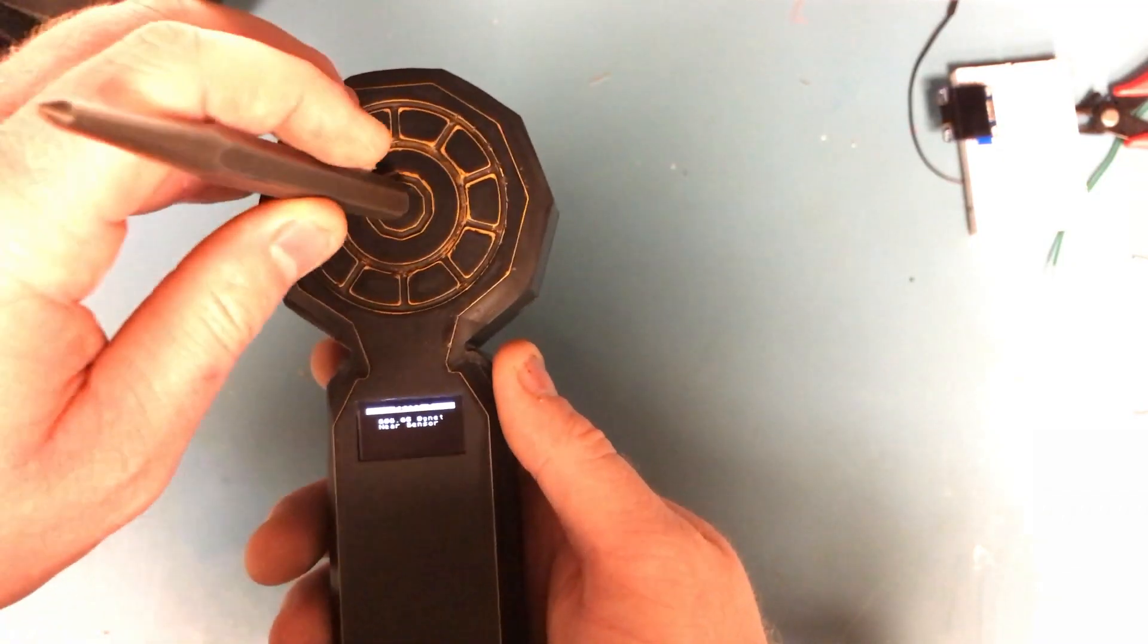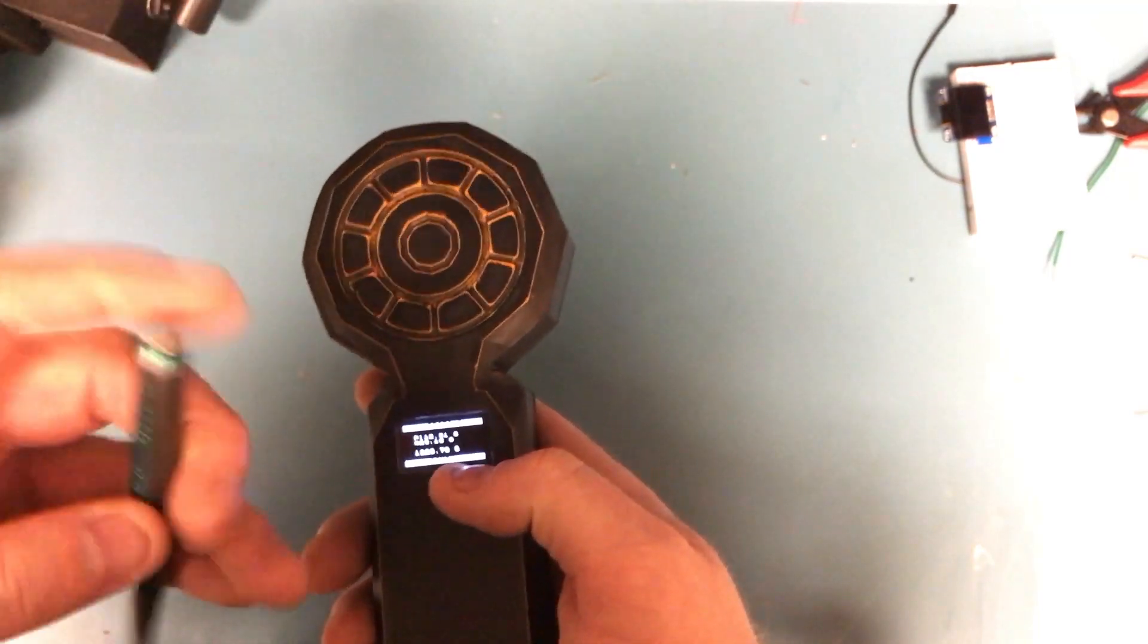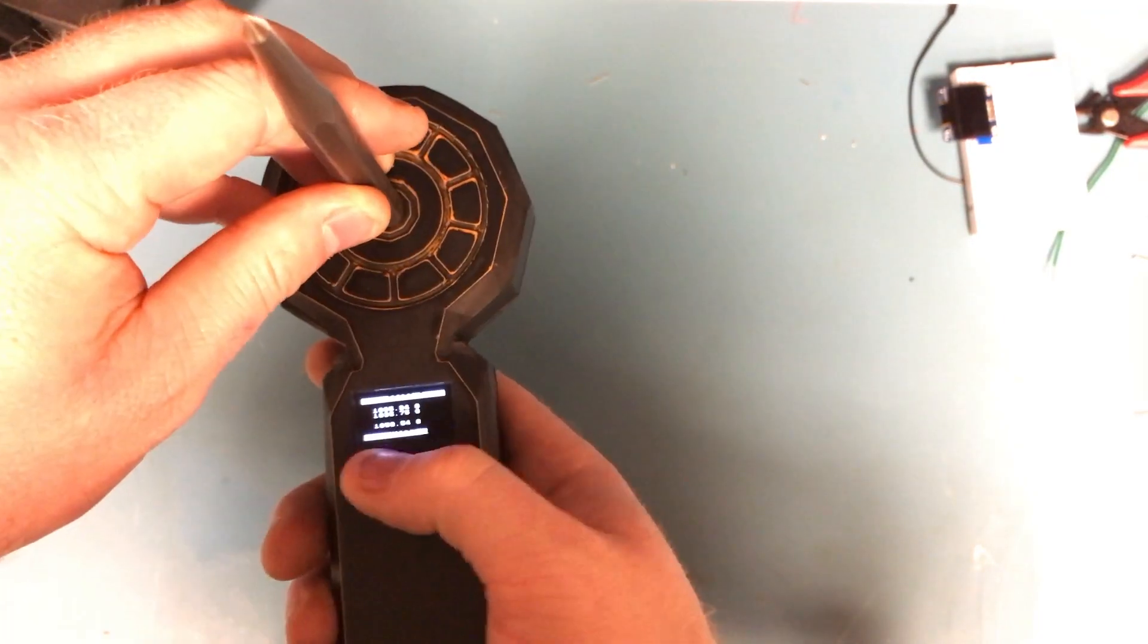In addition to the three readings at the bottom, we have the pole indicator. So it says south. We flip it over. It's going to say north.